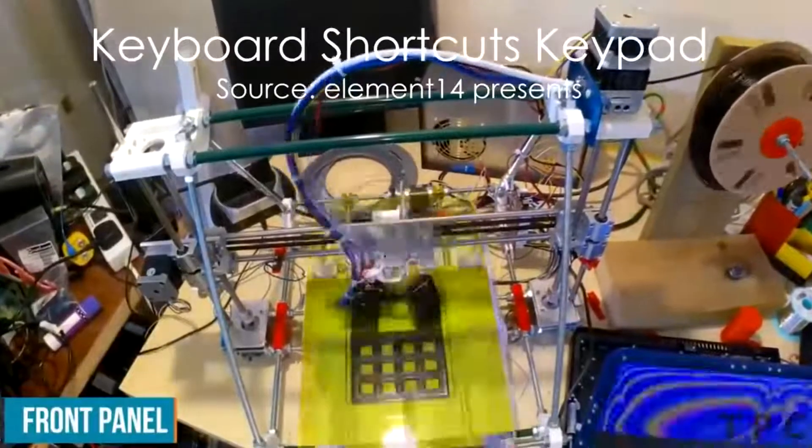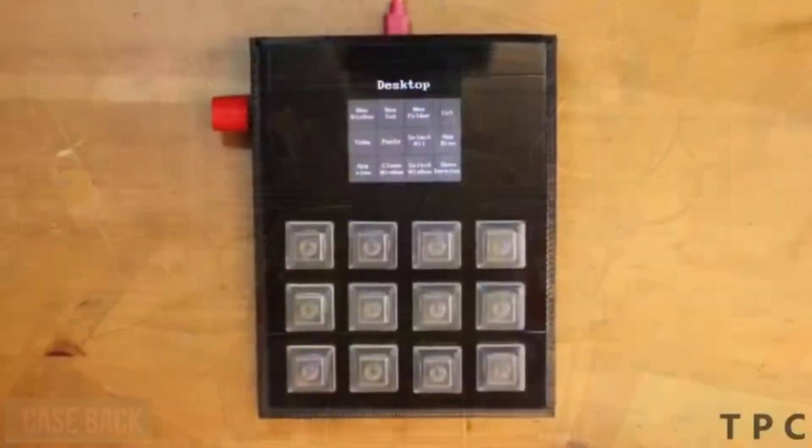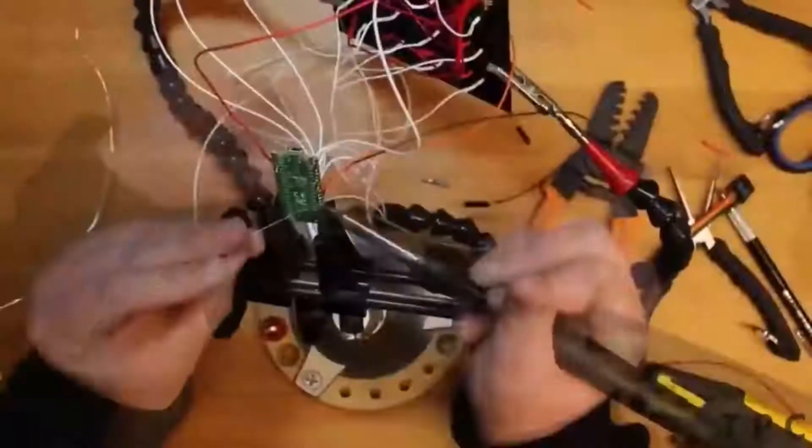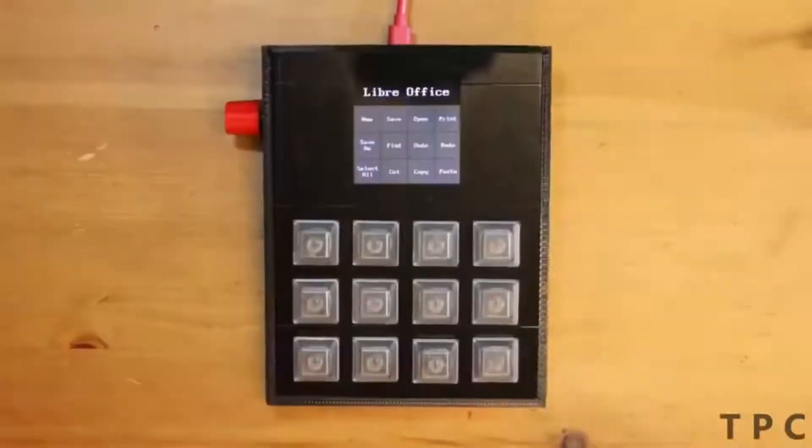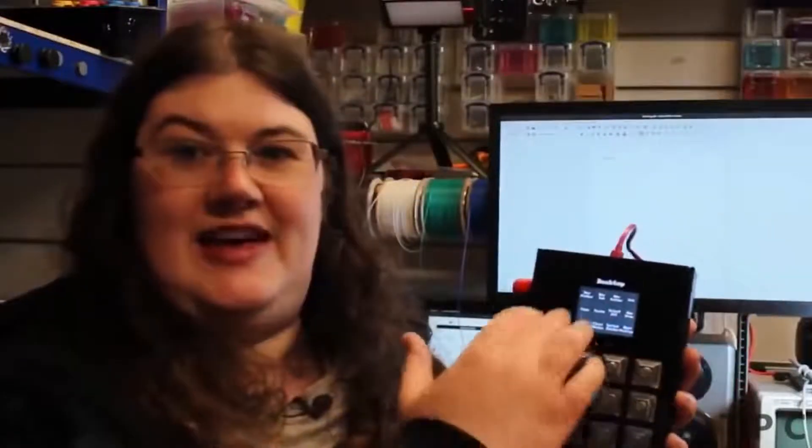If you work on multiple programs on your computer, you can save time and make your task quicker using this shortcut keypad. Using this project you can select 12 different keyboard shortcuts. A toggle switch lets you switch between the programs, and the LCD displays what each switch is designed to do.